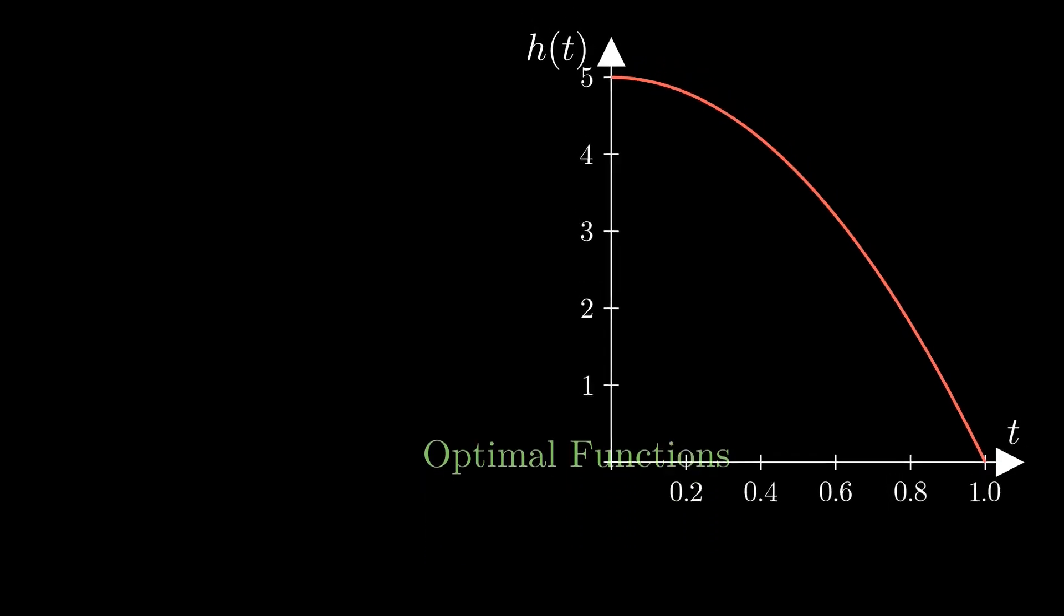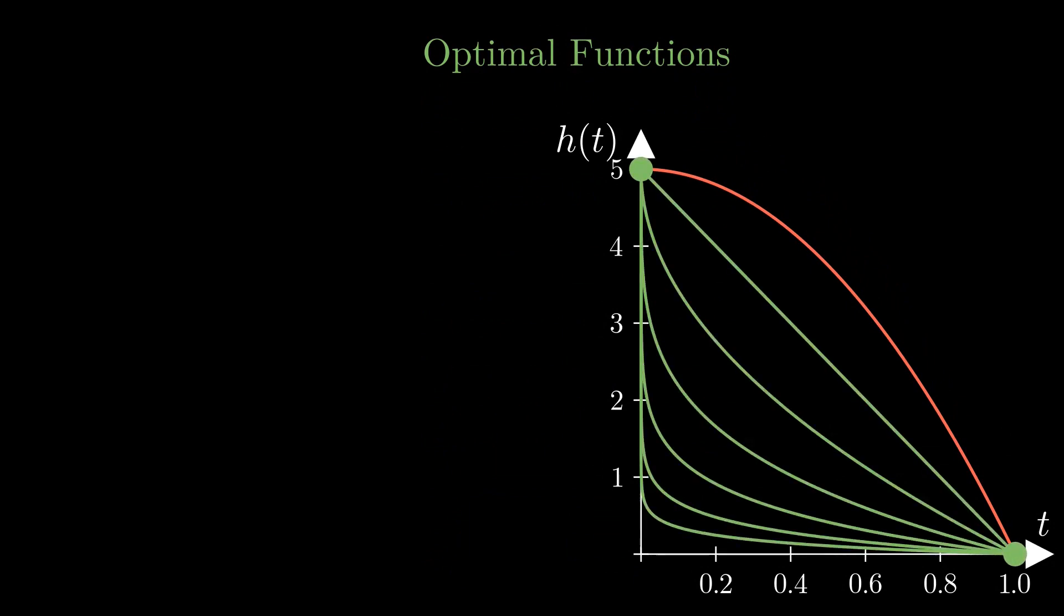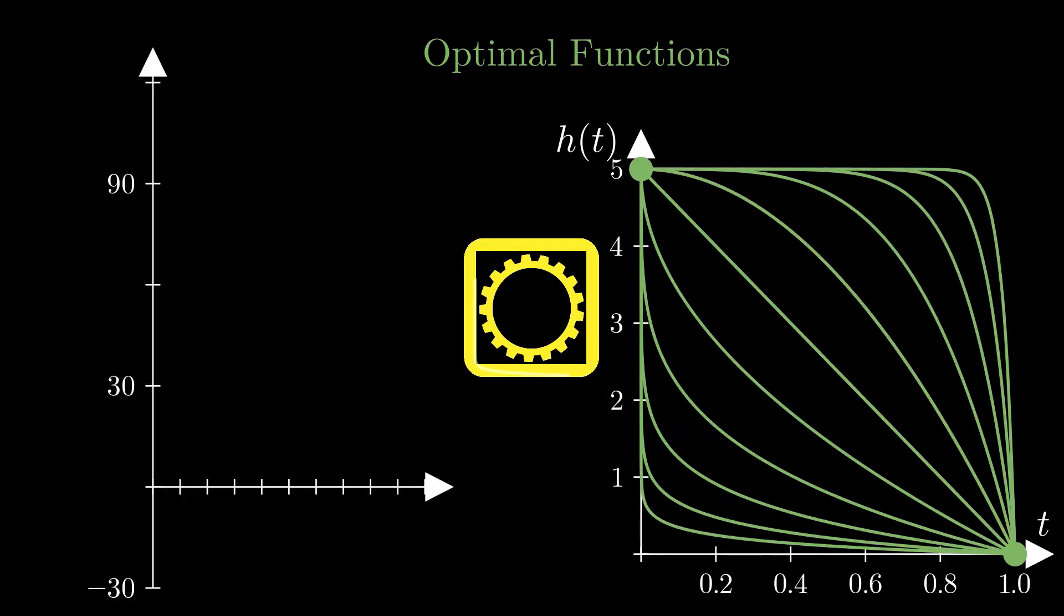Now imagine that this parabola is just one out of an infinite set of smooth functions that interpolate between the initial and the final state of this motion. You may think of them to be alternative trajectories in different universes with different physical laws. And imagine further that there is an operator that converts each of these functions into a number. All the functions shown here belong to one family of curves that are all mapped onto the red graph.